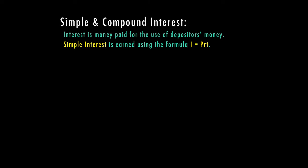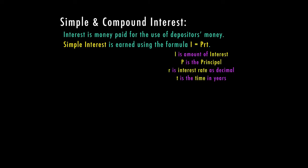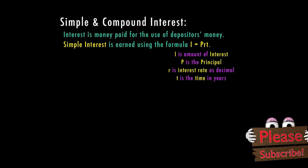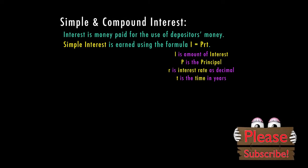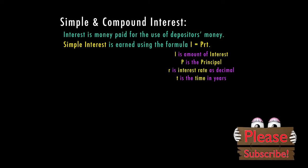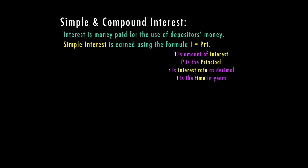Simple interest is earned using the formula I equals PRT. The I stands for the amount of interest — what we're solving for is how much interest did we earn based on all the other information. P is the principal, the amount of money that you start with, whether you're borrowing or putting it in the bank. R is the interest rate, and you have to convert this into a decimal. So anytime you have your interest rate, it's going to be in a percent, and we have to convert that to a decimal in order to plug it into our formula.